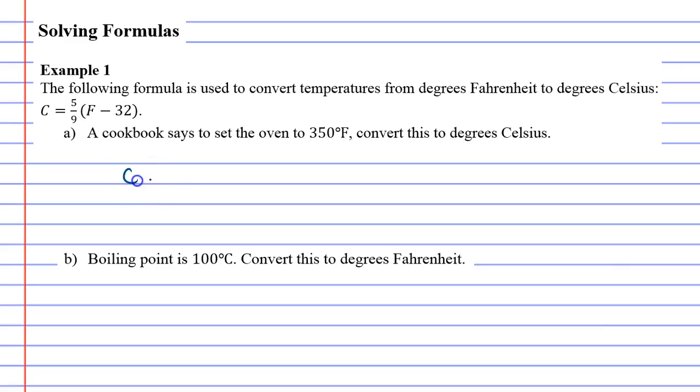Alright, so we're going to take our formula C equals 5 over 9 bracket F minus 32, and we're going to use substitution. So the 350 represents the F. 5 over 9, 350 minus 32.